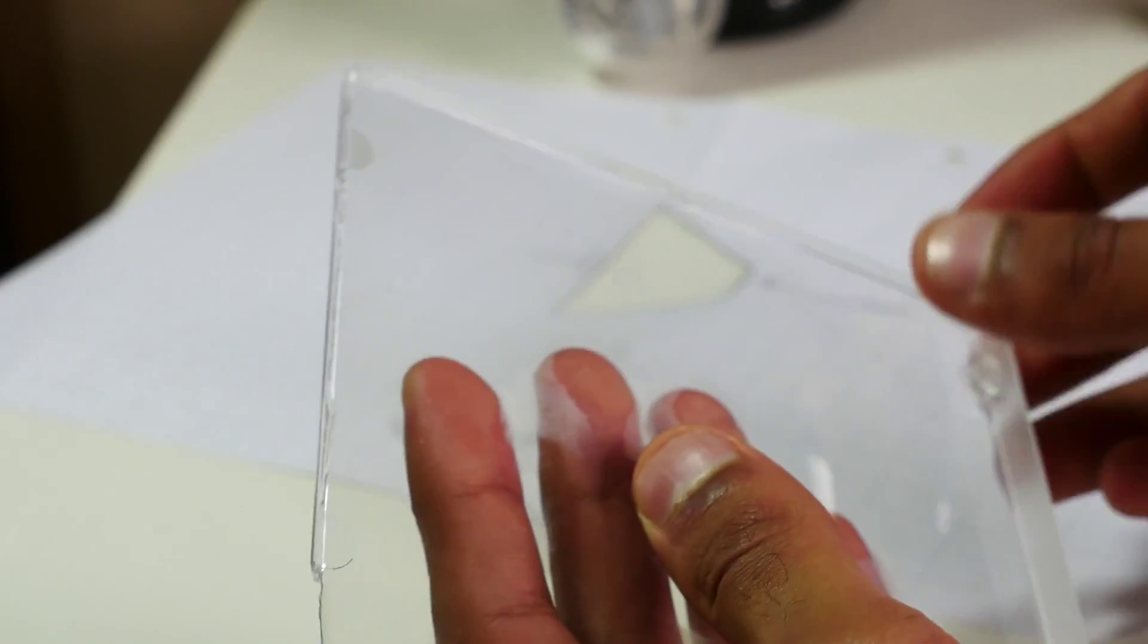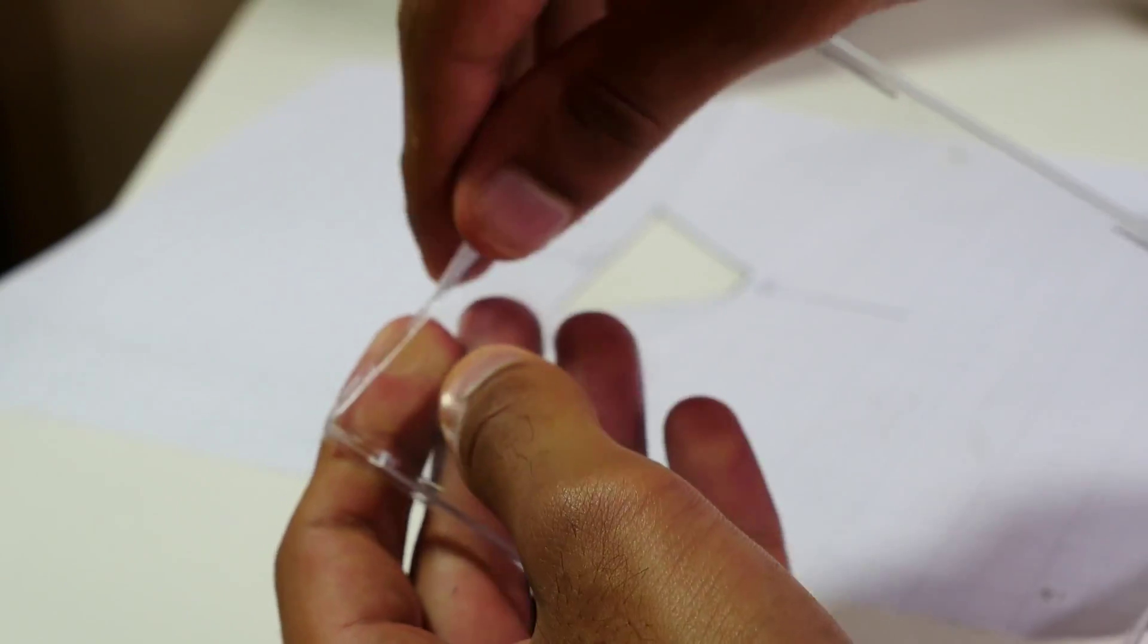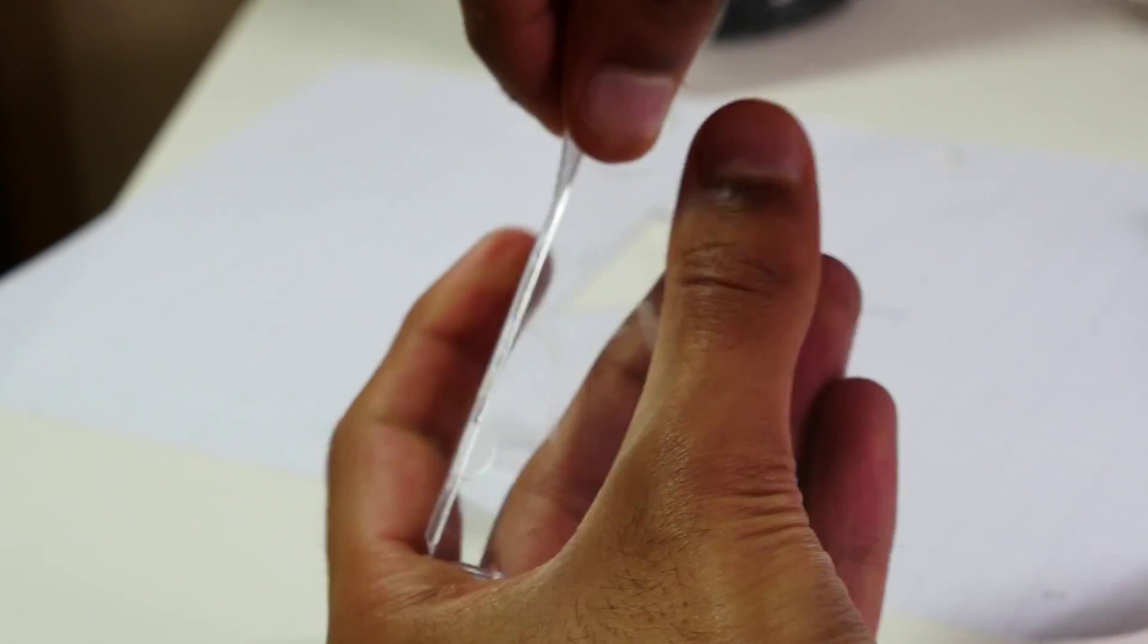Get your little paper template, and then just before we start cutting, take off the sides of the CD case because they're just going to get in the way. You don't need them at all.